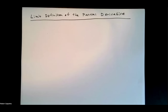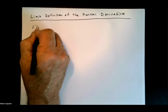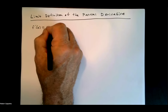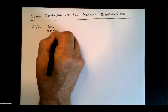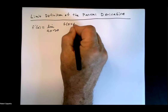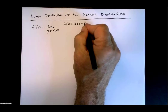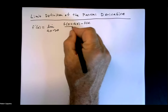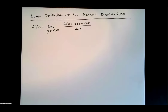We remember from Calculus 1 that f prime of x is the limit as delta x goes to zero of f of x plus delta x minus f of x over delta x. Do you remember what that meant geometrically? What did that represent?